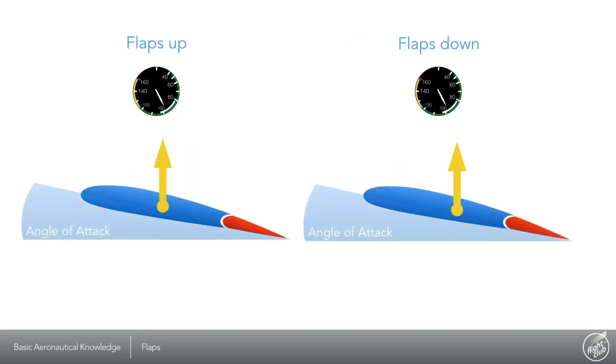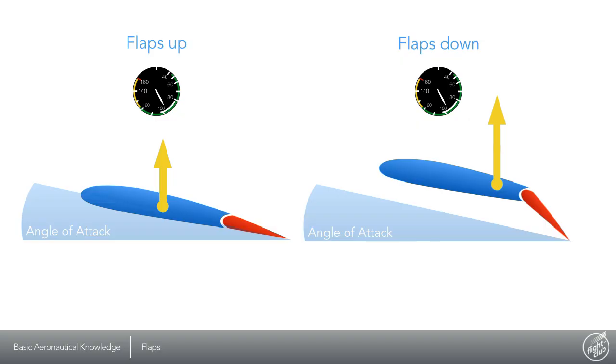Compared to a flaps up configuration of an airplane flying at the same airspeed, with flaps down the wing's camber increases, the chord line alters and makes the effective angle of attack larger. This results in the lift vector rising and moving slightly backwards.